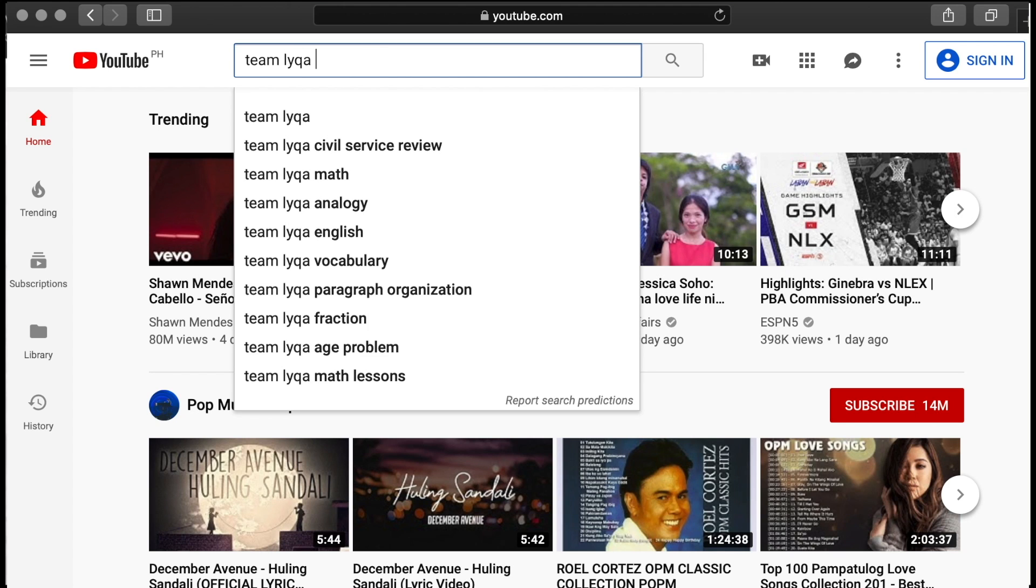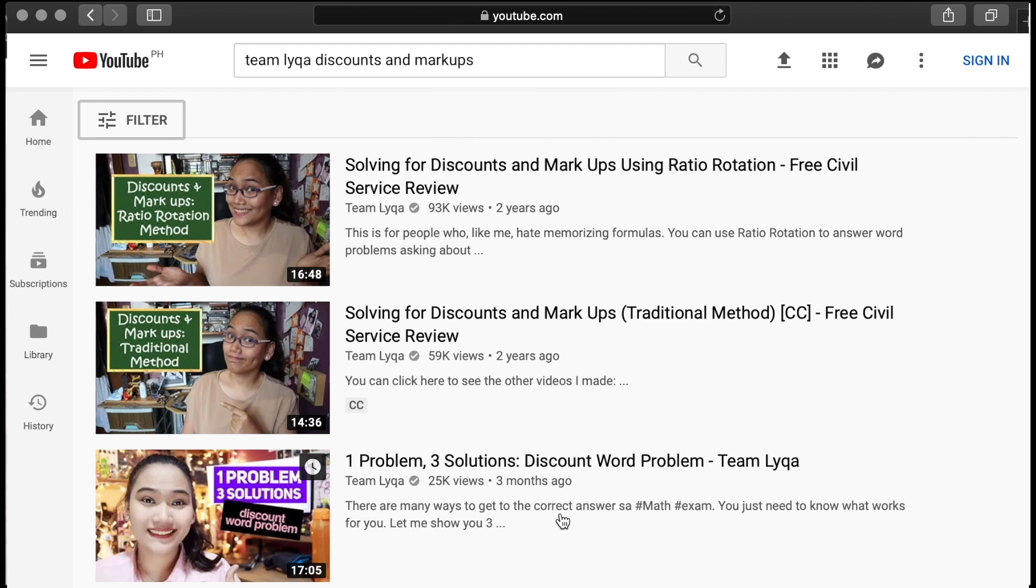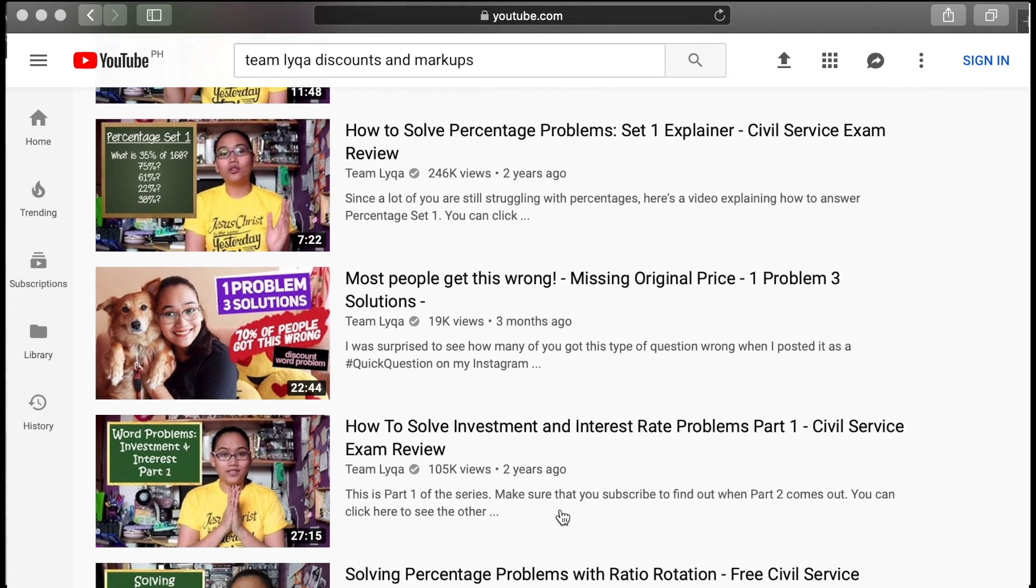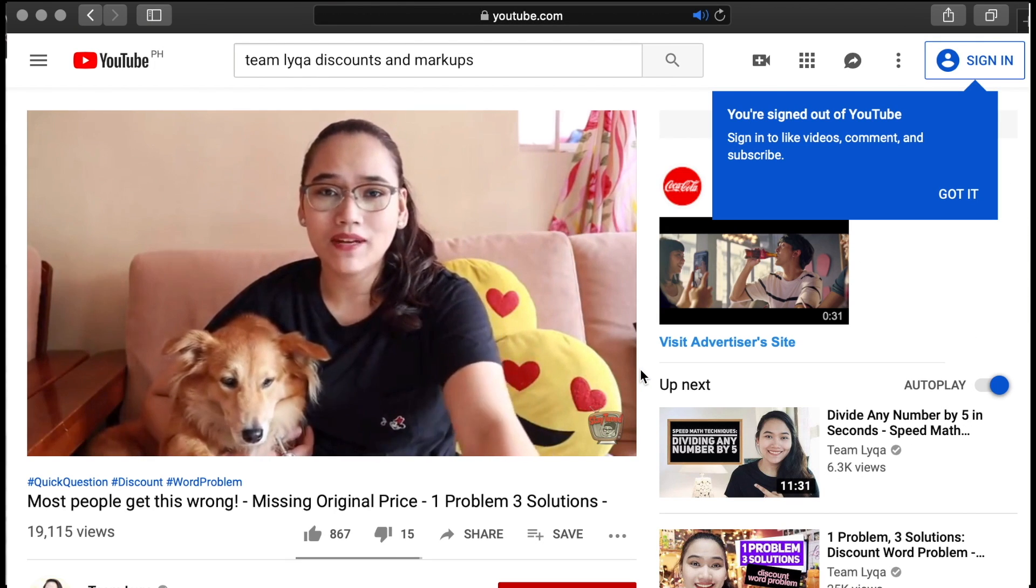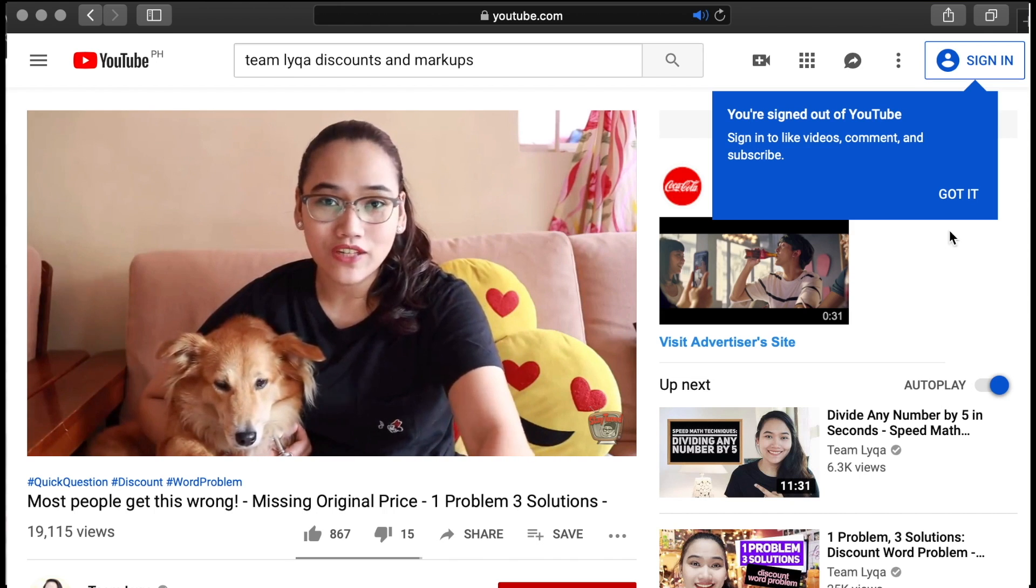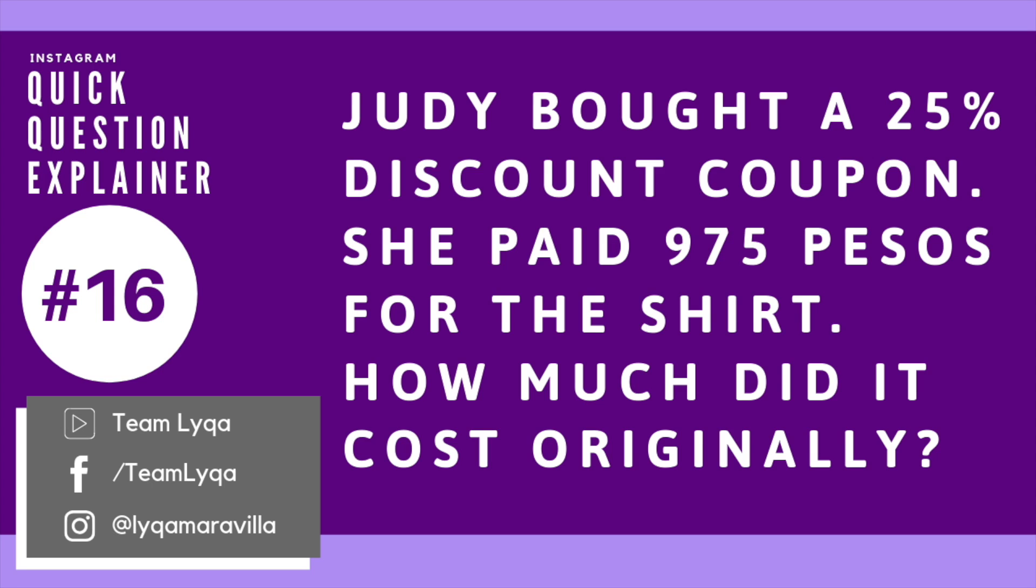This particular question is all about discounts and markup. And I know this type of question usually confuses people and I wasn't surprised when the results came out. I've answered this many times on YouTube, I've told you many times. I even have a dedicated video on this question which I posted for the March exam but many still got it wrong. So if you don't know that lesson yet, it's also linked in the description of this video. This is a question where many are careless, many make mistakes. They think they're using a speed technique. They think they're outsmarting the question but it's actually wrong. So you really have to be careful and I'm going to explain it to you. It says, Judy bought a shirt using a 25% discount coupon. She paid 975 pesos for it. How much did it cost originally?